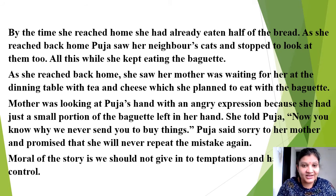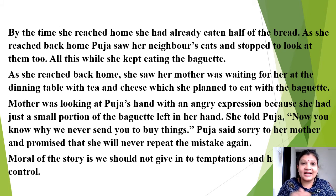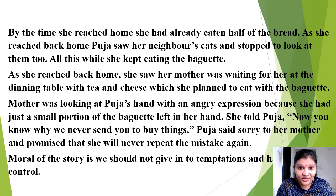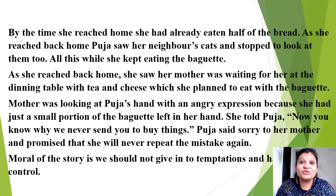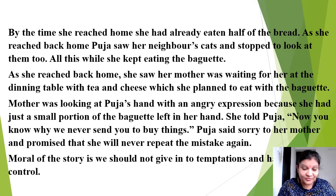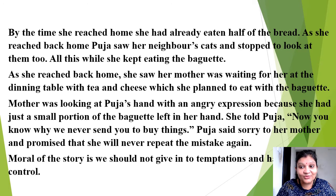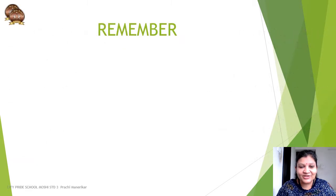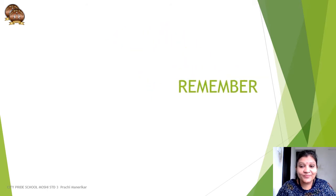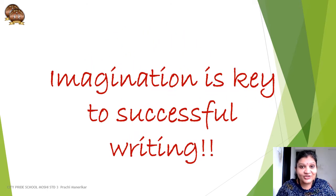The moral of the story is: we should not give in to temptations and should have self-control. The setting and conclusion are not in the picture — we have to decide them on our own. Setting is not just where the story happens; it's also how you set the narrative, like the detail that she always wanted to go to the market herself. Purpose, action, emotion — we included everything. That's how you write with imagination. Always remember: imagination is the key to successful writing. Happy writing!